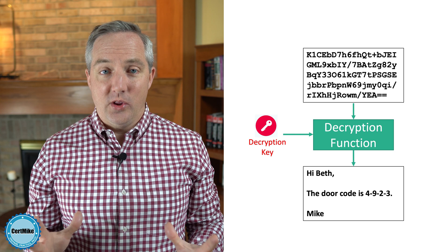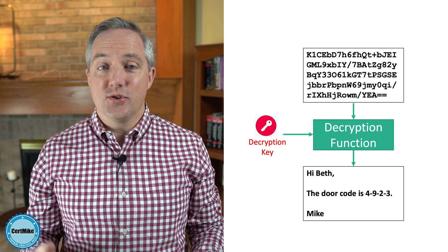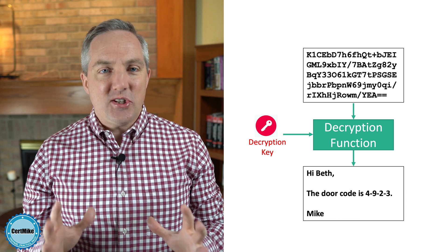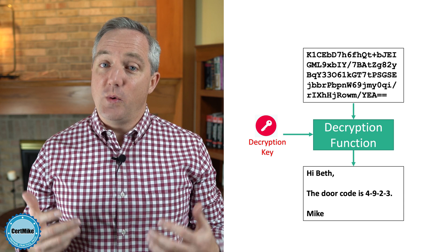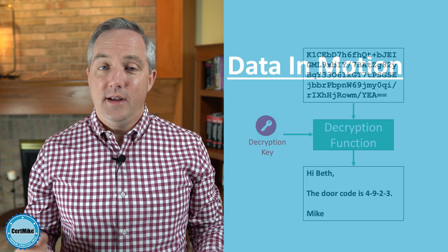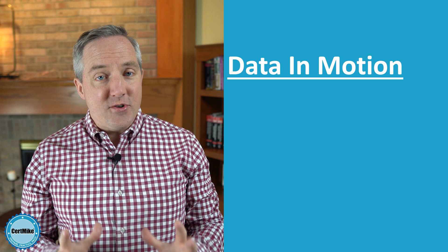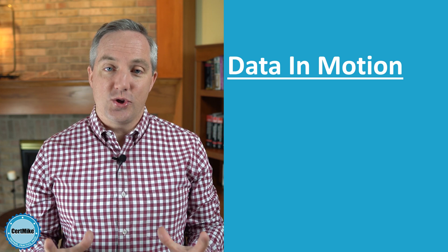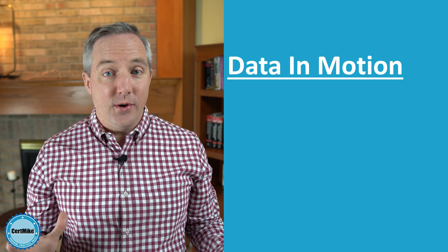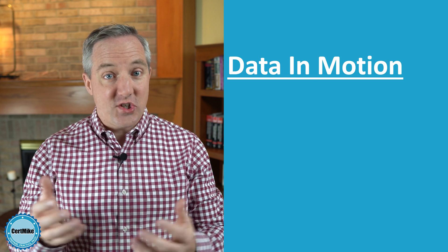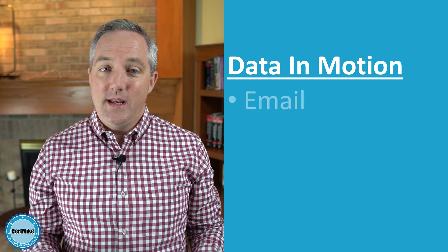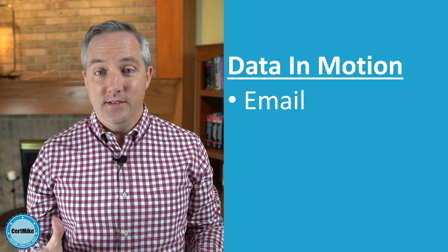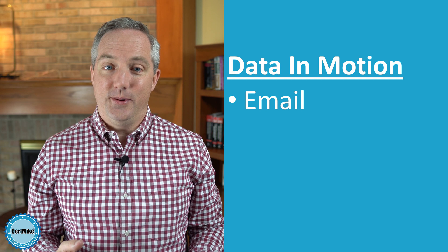I gave you an example of cryptography for an email message, but that's only one application of this powerful tool. Let's talk about a few other examples of places we might use cryptography. The first major category of cryptographic operations is protecting data in motion — information that's exposed because it's traveling from one place to another over a network. The email message I mentioned earlier is an example of data in motion, but it's not the only example.